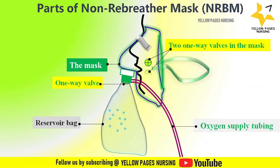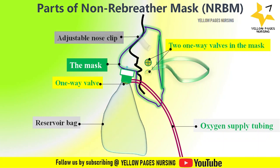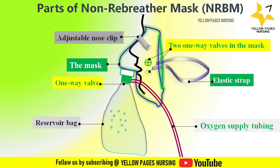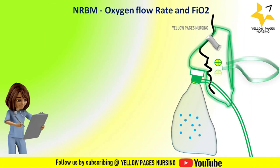The oxygen supply tubing connects the non-rebreather mask to an oxygen source, such as an oxygen cylinder or wall outlet. The adjustable nose clip helps to secure the mask to the patient's face. The elastic strap helps to tighten the mask in order to prevent air leaks, and this maximizes the concentration of oxygen being delivered to the patient.